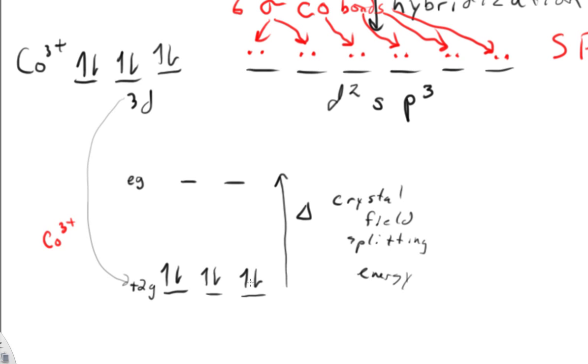Now if this were a weak field ligand, the EG orbitals would be closer together. Therefore, the energy to unpair these electrons would be sufficient to make a smaller jump. But because this jump is so big,